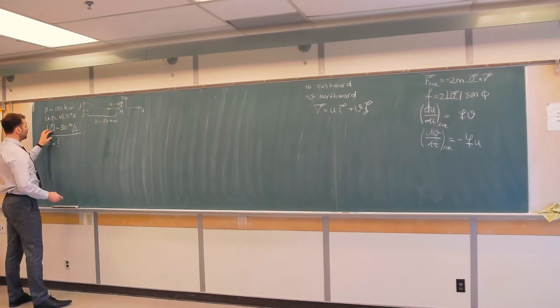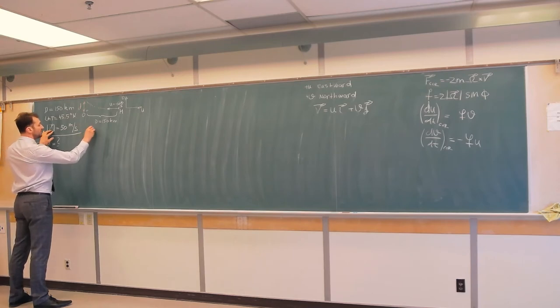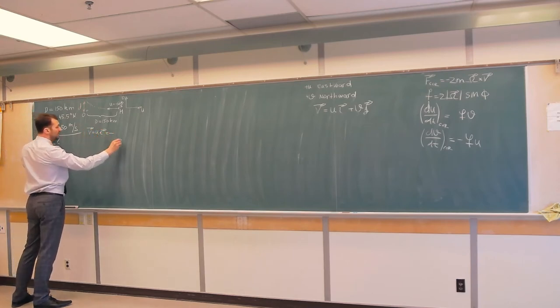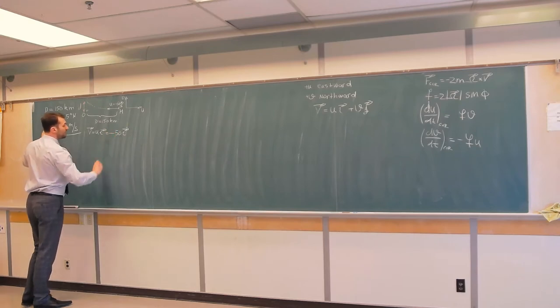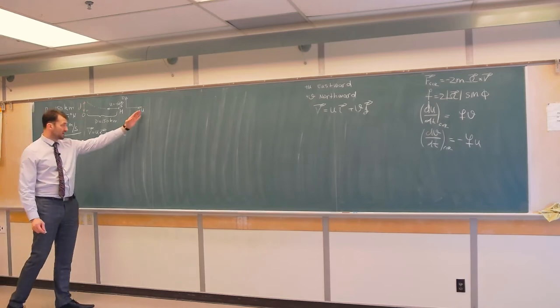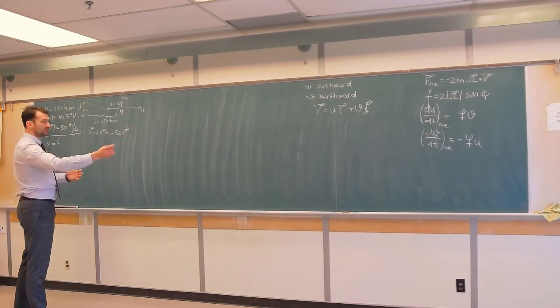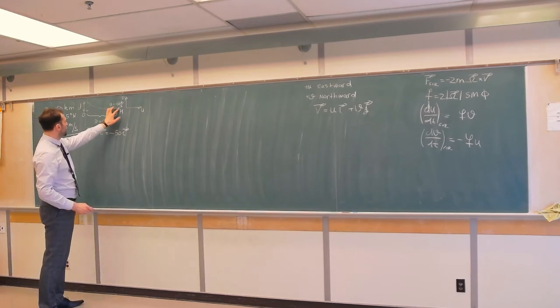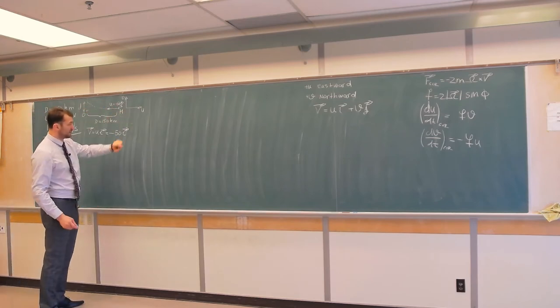Or if you want to put it in this format, then V, which is U, would be negative 50 times I, where I is unit vector in the positive U direction, namely positive X direction, or eastward. This is negative sign because parcel of air is traveling in the opposite direction of positive U.